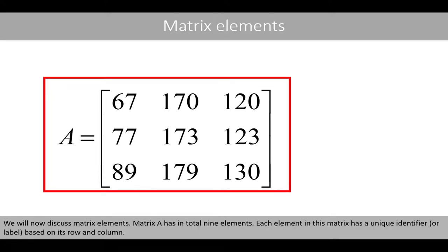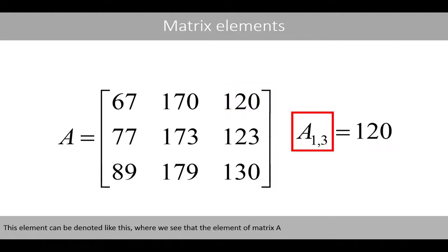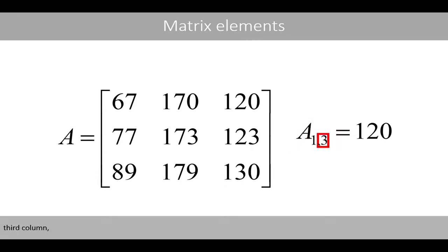We will now discuss matrix elements. Matrix A has in total nine elements. Each element in this matrix has a unique identifier or label based on its row and column. For example, the element located in the first row, third column, is equal to 120. This element can be denoted such that the element of matrix A at the first row, third column is equal to 120.